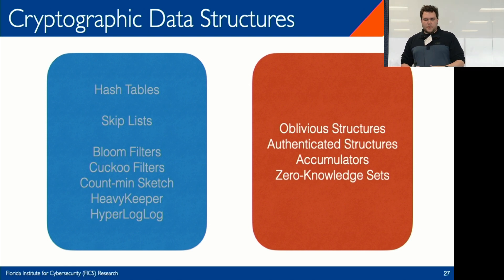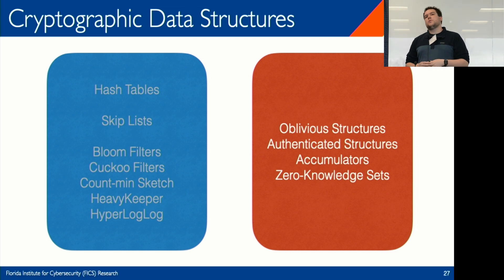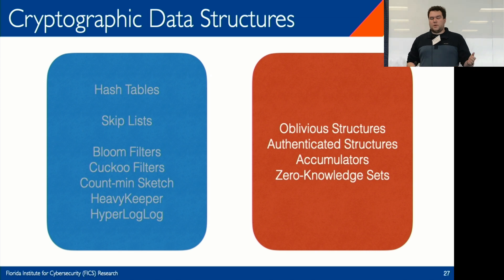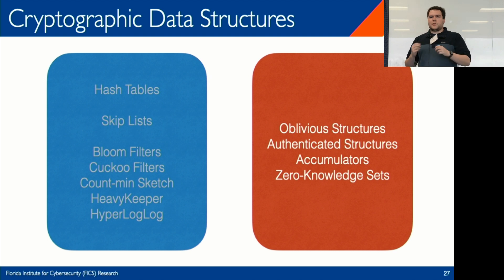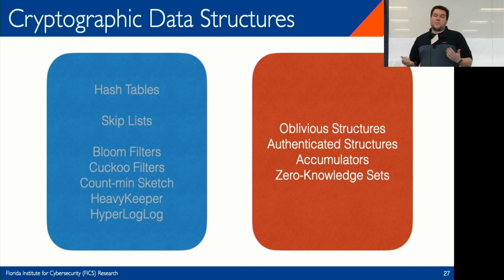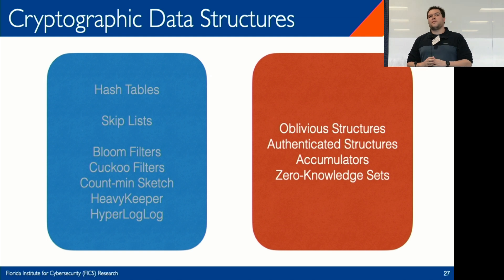We want to define a security notion for the heavy hitters problem and find an adversarially robust structure through simple changes to base structures. One last thing is applying the same reasoning to cryptographic data structures — structures defined mostly in the theoretical cryptography literature with stringent and strong security properties built in, such as oblivious structures, authenticated data structures, and zero-knowledge sets. Analyzing these from a data-structure-first perspective rather than ascribing a protocol to them has advantages, such as asking what it means to have a compact verifiable data structure.